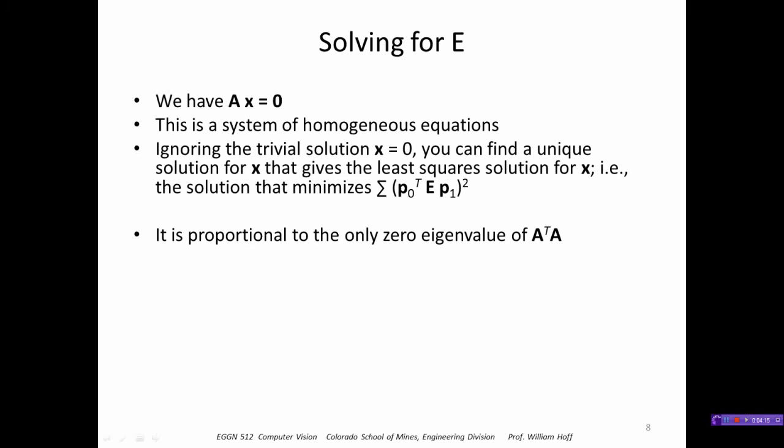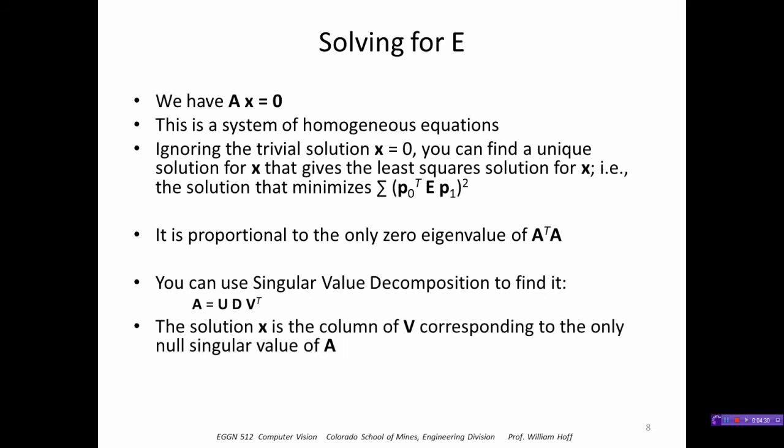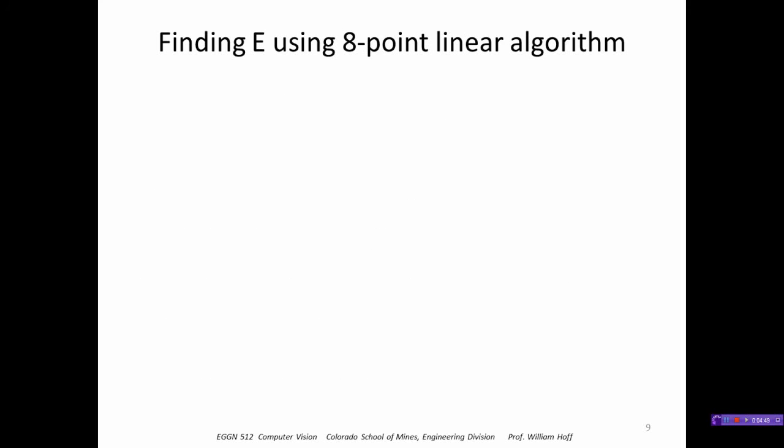We're going to get this by taking the eigenvector corresponding to the only zero eigenvalue of A transpose A. We can use SVD to find this. The solution x is the column of V in this decomposition corresponding to the only null singular value of A. Effectively, that is the rightmost column of V because the singular values are ordered from highest to lowest.